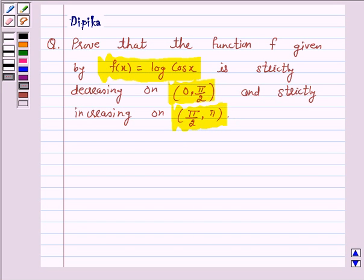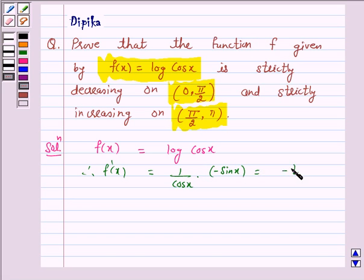So let's start the solution. Here, given f(x) = log cos x. Now, f'(x) = 1/cos x · (-sin x), and this is equal to -tan x.